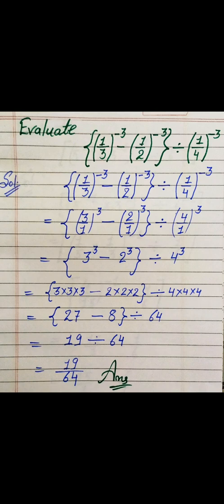We know how to make the power positive by taking the reciprocal of the base. So (1/3) becomes (3/1) to the whole power 3, (1/2) becomes (2/1) to the whole power 3, and (1/4) becomes (4/1) to the whole power 3. Now (3/1)^3 can be written as 3^3, (2/1)^3 as 2^3, and (4/1)^3 as 4^3.